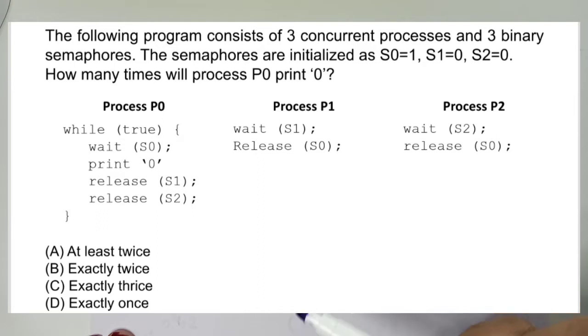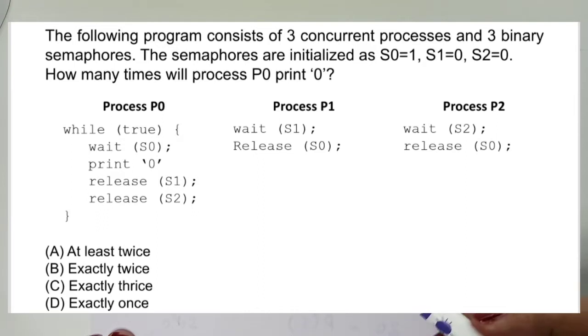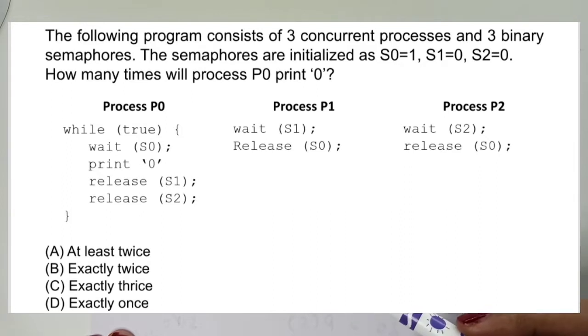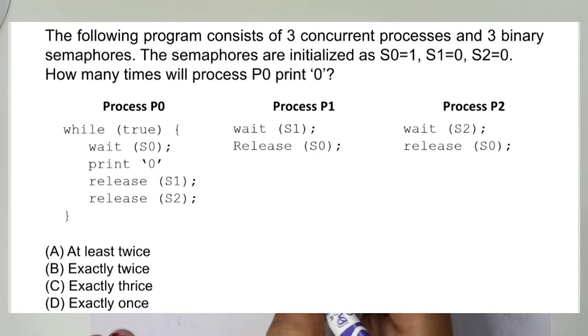The answer choices are: at least twice, exactly twice, exactly thrice, or exactly once. We have to solve this question and determine how many times it will print 0.